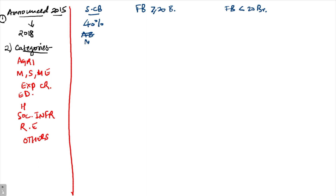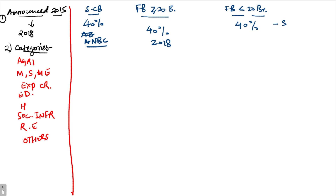The 40% target applies to scheduled commercial banks and also to foreign banks with 20 or more branches — to be achieved by March 2018. For foreign banks with less than 20 branches, the target is also 40% but with no sub-targets, to be achieved in a phased manner up to 2020: 38% by 2018-19 and 40% by 2019-20.